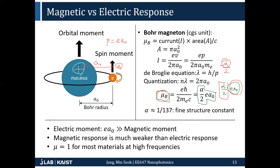The fine structure constant alpha has the value of one over 137 — a well-known number determined by elementary constants. Because of this, for a given atom, the electric moment tends to be at least two orders of magnitude larger than the magnetic moment. That's why mu equals one for most materials — the magnetic response is naturally much weaker than the electric response, because the fine structure constant is small. This is why it's actually difficult to induce magnetic response in natural materials.